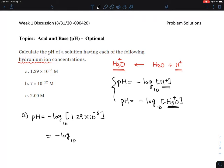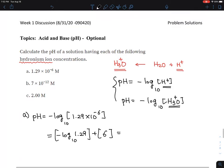That's minus log 1.29 plus 6, right? So this number plus 6. And then you will get 5.889, so that's the pH of the first problem.